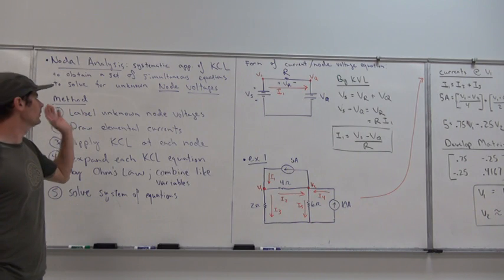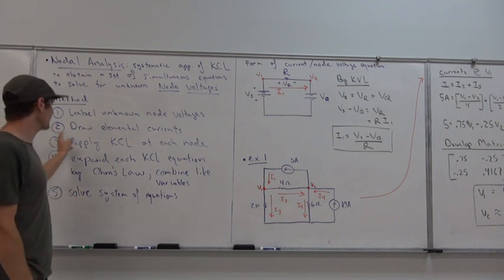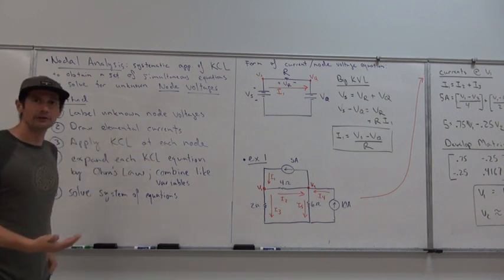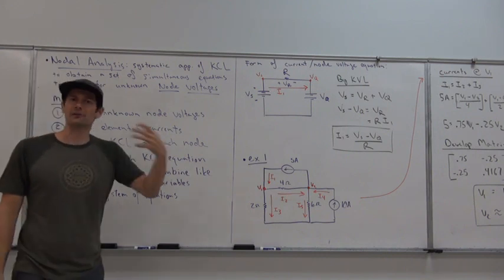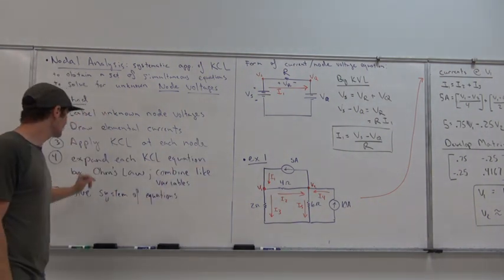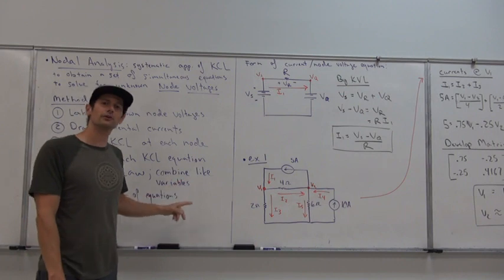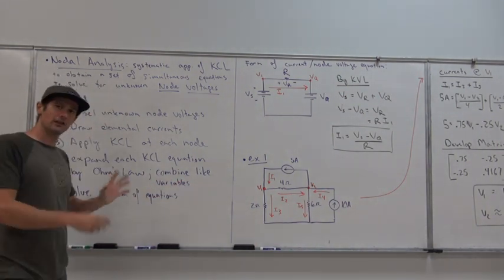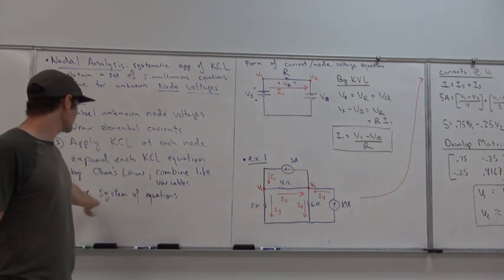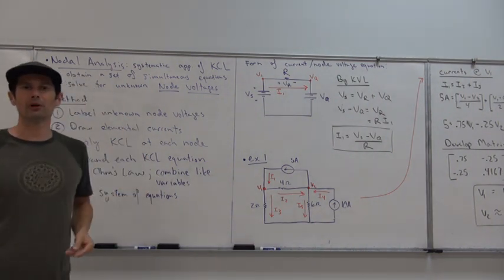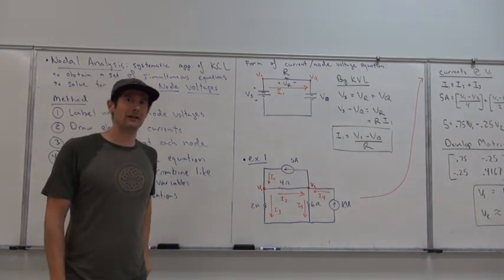The five steps are: first, label unknown node voltages. Second, draw elemental currents — the currents flowing through each resistor. Third, apply KCL at each node: summation of currents in equals summation of currents out. Fourth, expand those KCL equations using Ohm's Law. Fifth, combine like variables, develop a matrix equation Ax = b, and solve by row reduction into echelon form to find the node voltages.